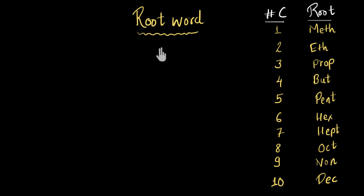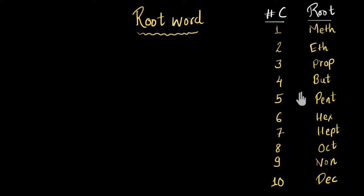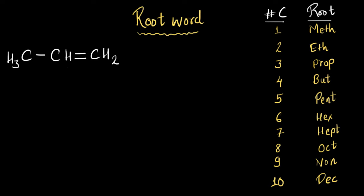Let's first talk about the root word. This refers to the number of carbon atoms present in a molecule. If there is only one carbon atom, we use the root word 'meth'. If there are two carbon atoms, then we use 'eth'; three, then 'prop'; four, then 'but'; and so on and so forth. For example, if this is the molecule we are trying to name, I focus on the number of carbon atoms — I see three carbon atoms, so I use the root word 'prop'.